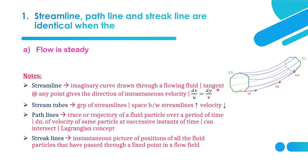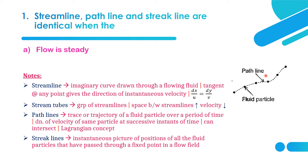The basic equation for a streamline is dx/u = dy/v. A stream tube is a group of streamlines compressed in a cylindrical shape. When the space between two streamlines increases, the velocity of the fluid particle decreases.